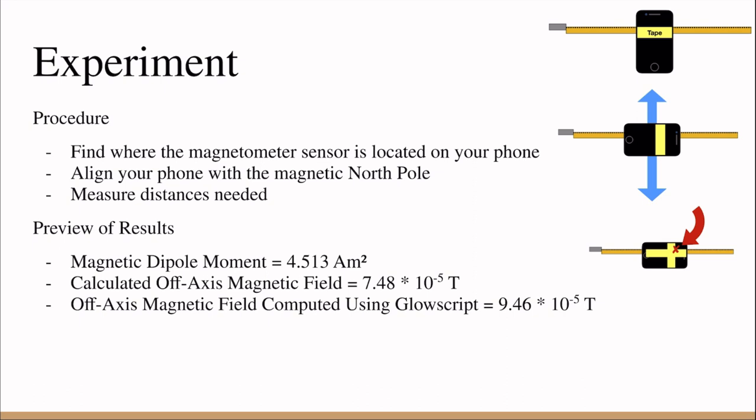For the preview of the results: the magnetic dipole moment is 4.513 amp-meters squared, the calculated off-axis magnetic field equals 7.48 times 10 to the negative 5 Tesla, and the off-axis magnetic field computed using GlowScript equals 9.46 times 10 to the negative 5 Tesla.